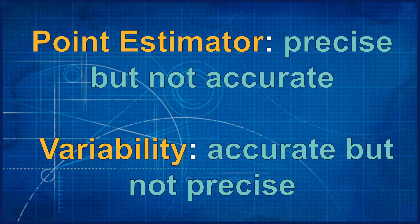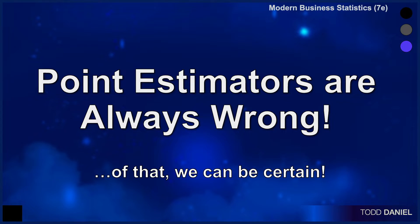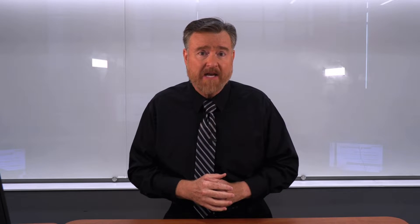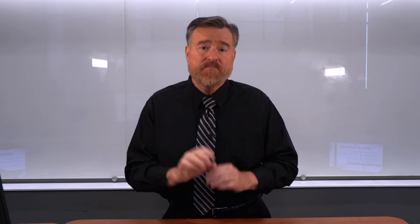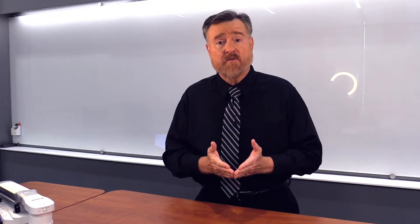A point estimate is very precise. When you say the mean is 50, you are making a very precise statement. However, we know that those precise estimates are always wrong — that no matter the sample you choose and how well you choose it, that sample will always deviate somewhat from its population if you take it out to enough decimal places. The mean is precise, but it's not accurate. On the other hand, the variability gives us a measure that is accurate — the mean will be within a certain range.